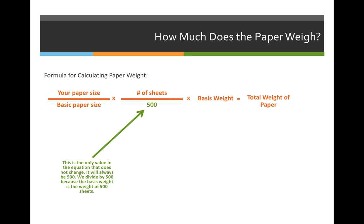In our formula, it'll be the PSS size divided by the basic size of paper, and that's the ideal size that a particular type of paper will be manufactured in.